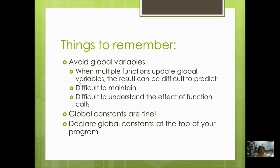So what should you remember about scope? You should remember to avoid global variables whenever you can, because when multiple functions update global variables, the result can be difficult to predict. Global variables are difficult to maintain, and you don't always understand the effect of a function call with a global variable, because anything can change at any time. So you don't really know what's happening, and sometimes strange things go on. You think you know the value of a global variable, but you don't really. So you want to avoid them. Only use them when you absolutely have to. Global constants, however, are fine. You should use them. Declare global constants at the top of your program. So I hope you understand global variables and scope a little bit better.